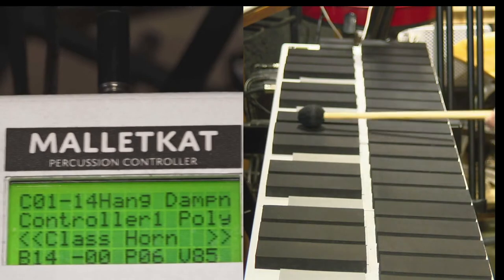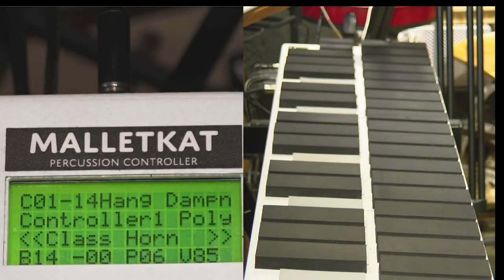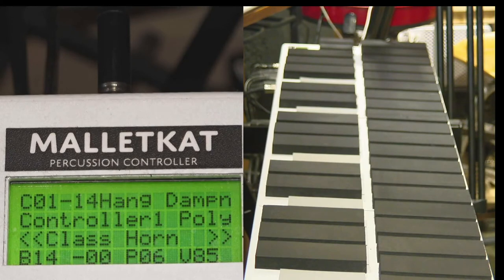One of the most important features on the Malletkat is the ability to create a chain. And what a chain is, is a collection of your user kits,